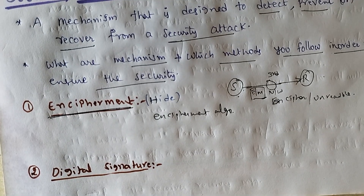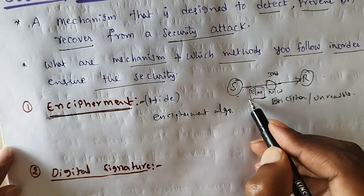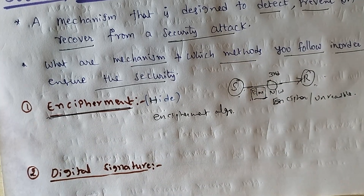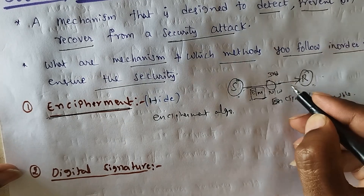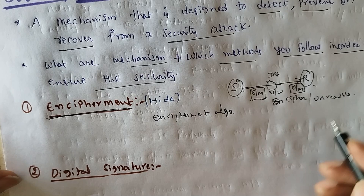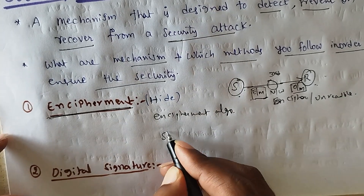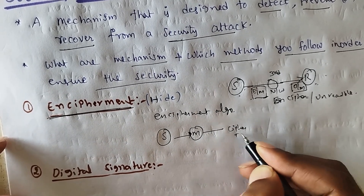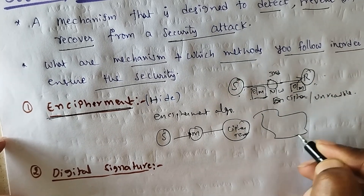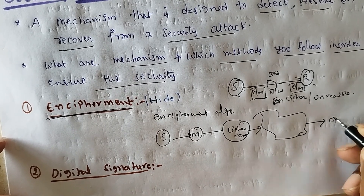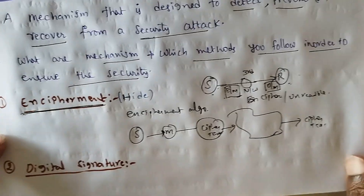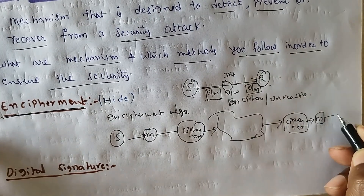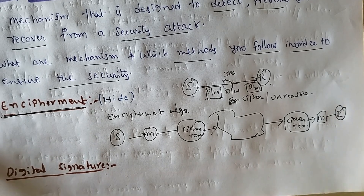On reaching the receiver side, the encrypted message will be converted back into the original message. So the sender sends a normal message, it is converted into ciphertext over the internet, and at the receiver side the ciphertext message is again converted back to the original message that is received by the receiver. This method is called encipherment.